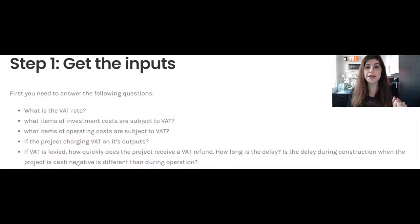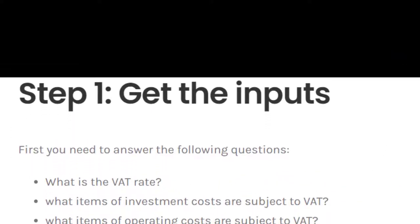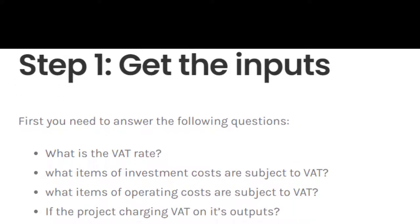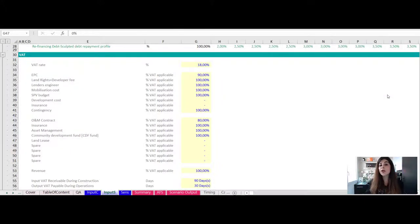Step one is to find the necessary inputs. You need to answer mainly these questions: What is the VAT rate? What items of investment costs are subject to VAT? What items of operating costs are subject to VAT? Whether the project is charging VAT on its output? If VAT is levied, how long it takes for the project to receive a VAT refund. Once you have the answers, you can go to your financial model.